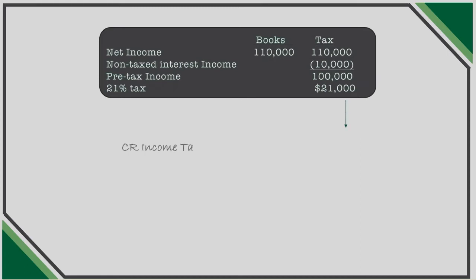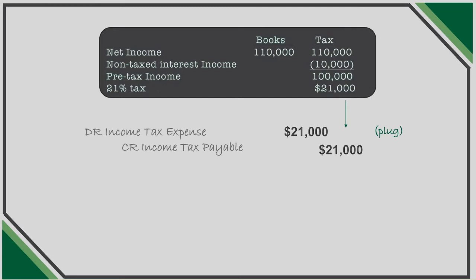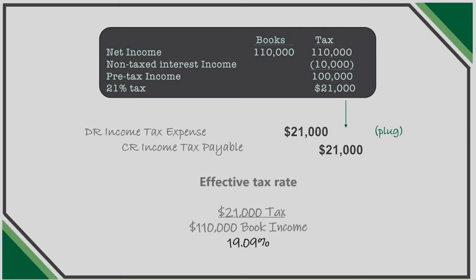The company would credit income tax payable to the IRS for $21,000. No deferred tax asset or liability is recorded, and the plug to tax expense is $21,000. Having a portion of income never subject to tax therefore reduces the overall tax rate of the company. Out of $110,000 of earnings, $100,000 is subject to 21% and the $10,000 is subject to 0%. In other words, this company pays $21,000 of tax on $110,000 of earnings, resulting in an effective tax rate of 19.09%, not the 21% statutory rate.